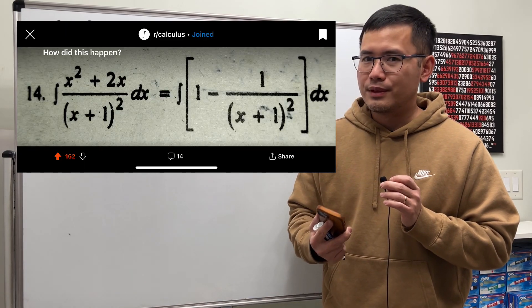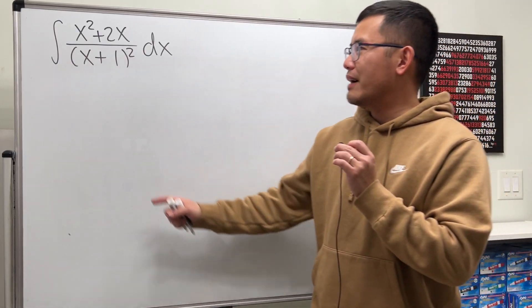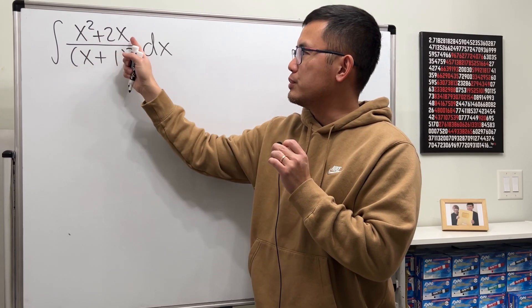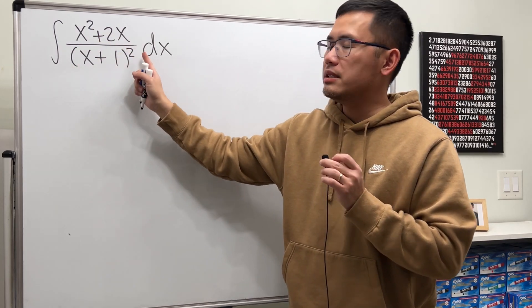How did this happen? Okay, let's have a look. Here we have the integral of x squared plus 2x over x plus 1 squared.